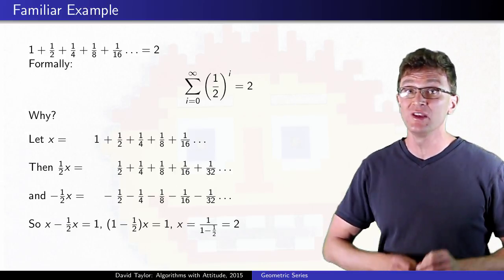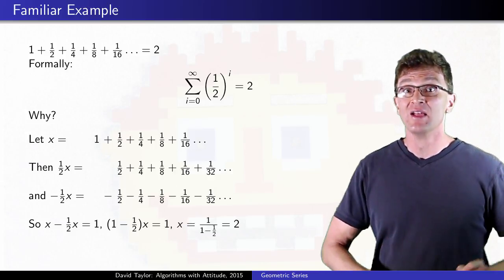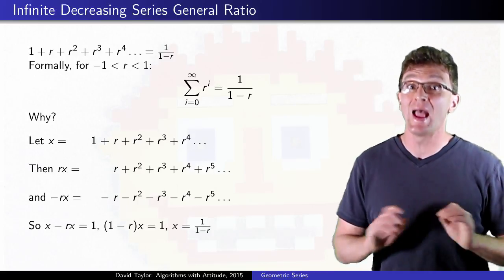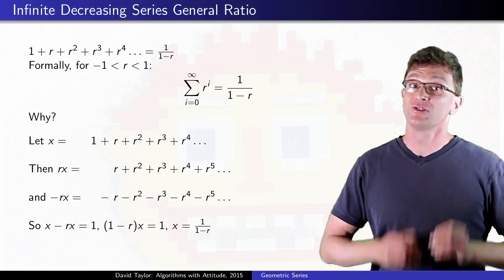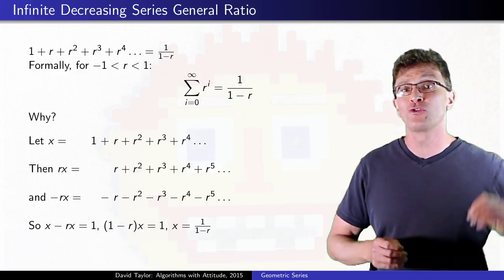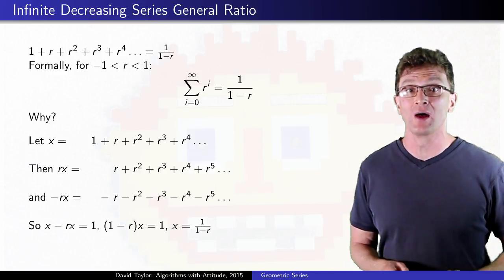Well the 1 half ratio isn't a special princess or anything. That same shifting trick really works with any ratio less than 1, so there's your first formula. It works for any ratio with absolute value less than 1.